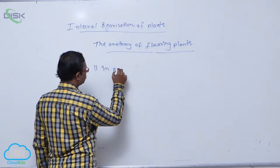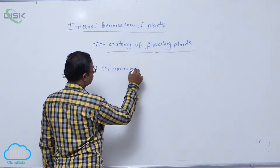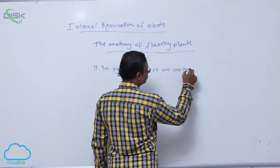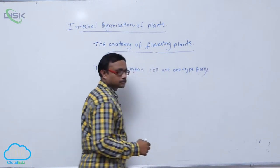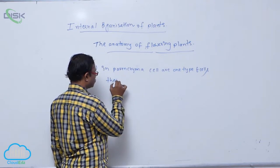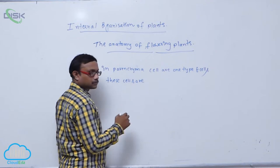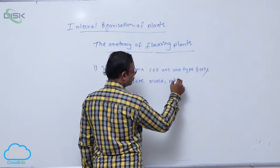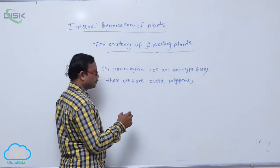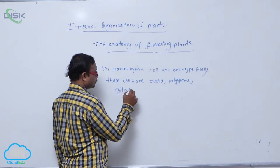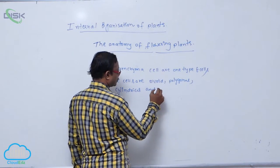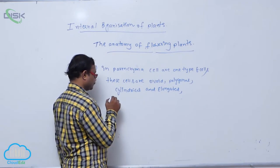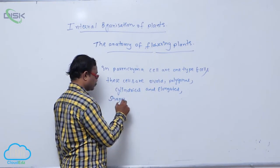In Parenchyma, cells are one type of cells. These cells are ovoid, polygonal, cylindrical, and elongated shapes.